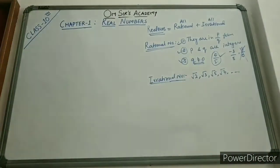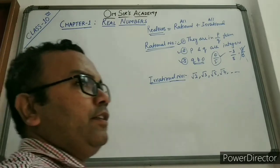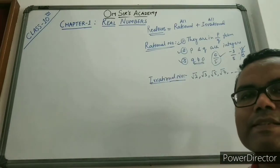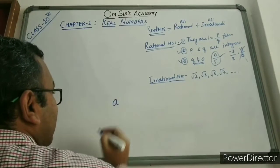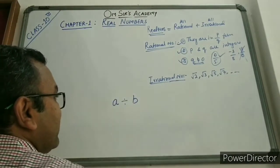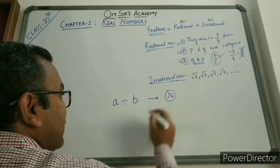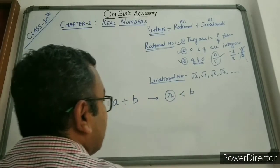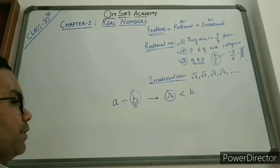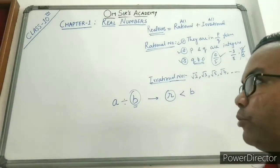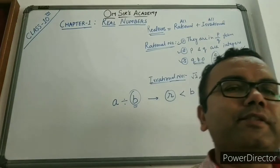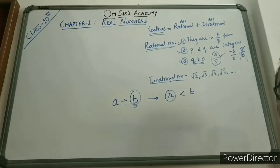In this chapter we are going to learn the details about Euclid's Division Lemma and Algorithm. Euclid's Division Lemma and Algorithm states that if any positive integer A is divided by any positive integer B, then we get a remainder R which should be lesser than B. Through this concept we are going to find the HCF of 2 positive integers.